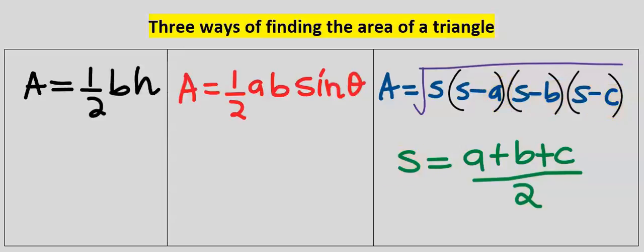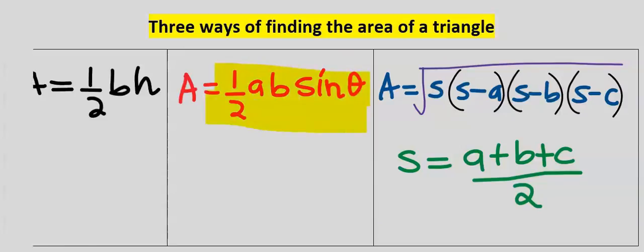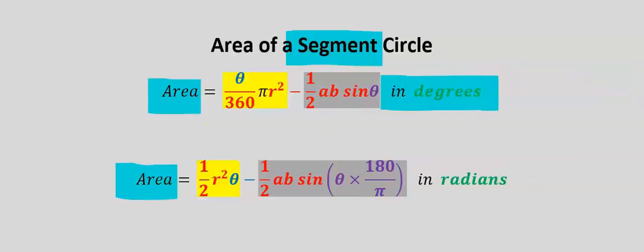In the third method, s is the semi-perimeter, which is the sum of the three sides divided by two. In this video, because of the central angle, we are going to use the two-sides-and-angle formula — this formula when the central angle is in degrees, and this formula when the central angle is in radians.